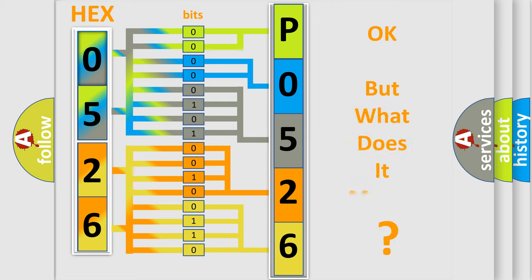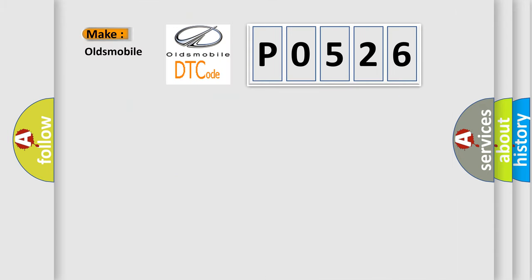We now know in what way the diagnostic tool translates the received information into a more comprehensible format. The number itself does not make sense to us if we cannot assign information about what it actually expresses. So, what does the diagnostic trouble code P0526 interpret specifically for Oldsmobile car manufacturers?